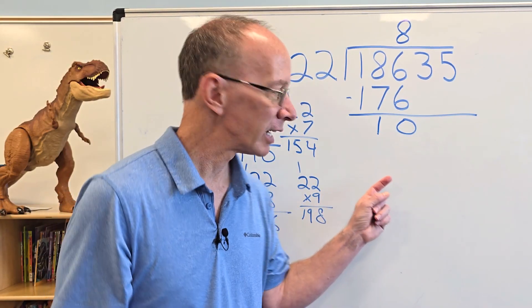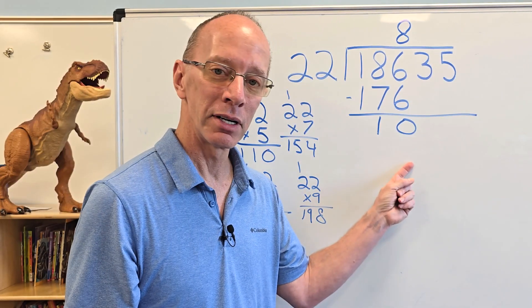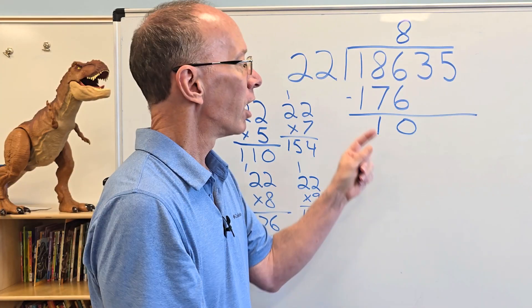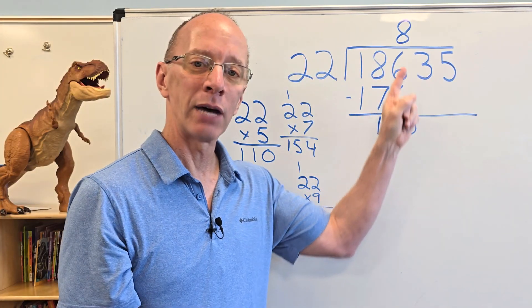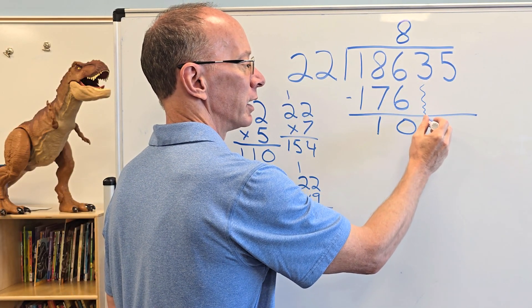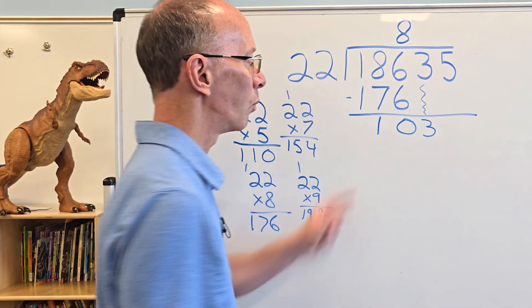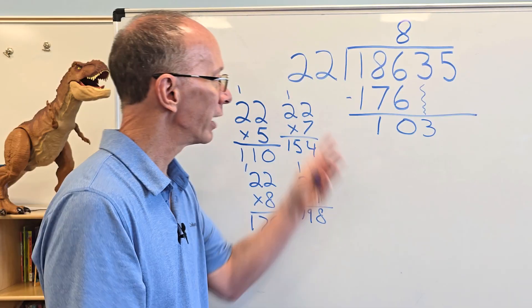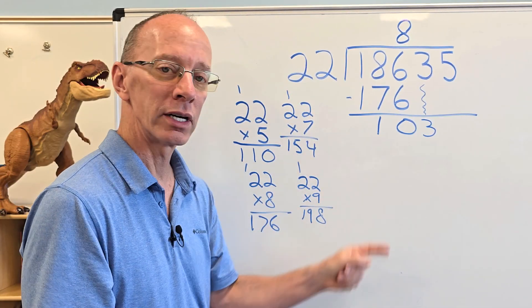Now, don't worry if you got a double digit number, you know, as a, you know, that you're left over with. Our next step is we need to drop the next number down. All right. So 3 comes all the way over here, right there, 103. And I start the whole process over. So how many times can I put 22 in 103?